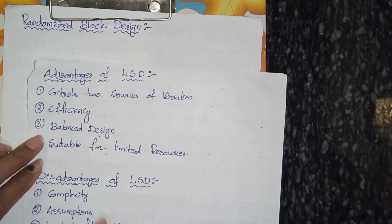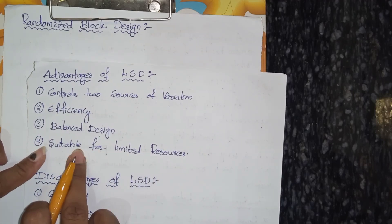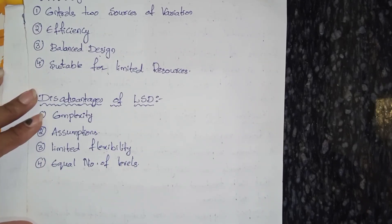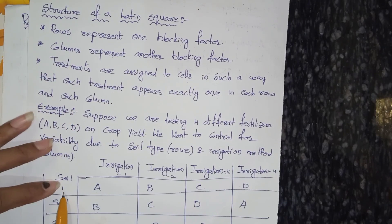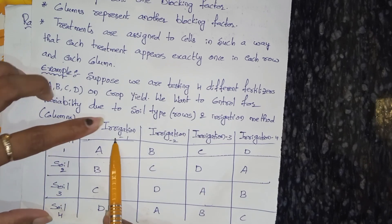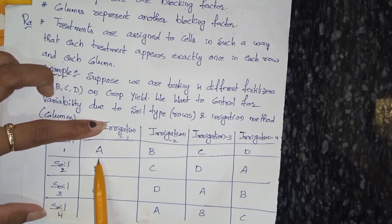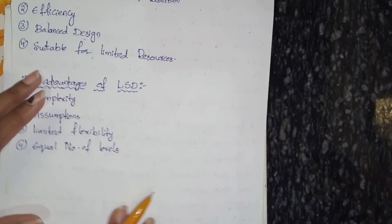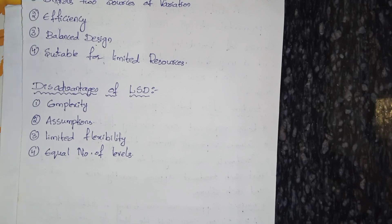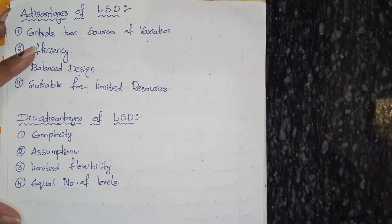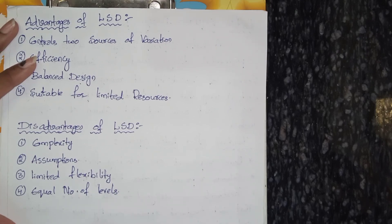Third disadvantage is limited flexibility — as noted, it is suitable for only limited sources, so we consider it an advantage and also a disadvantage. Fourth is equal number of levels — here everything must be balanced: soil receives four fertilizers A, B, C, D, and irrigation one also has four types of soils A, B, C, D. So the number of levels must be equal. Hope you all understand. If you like this video, please like, share, and subscribe. If you are newly watching and want a specific topic, please comment and I will try to make the video.